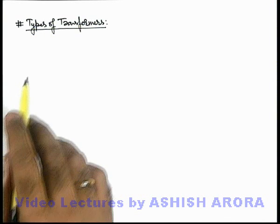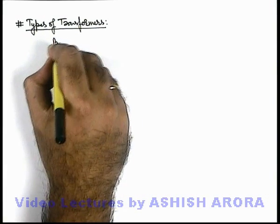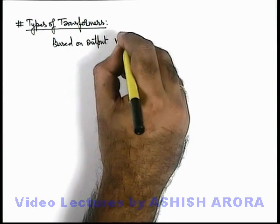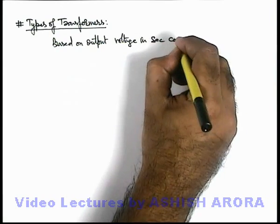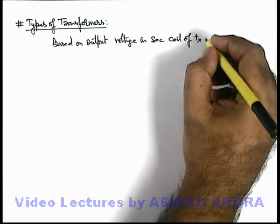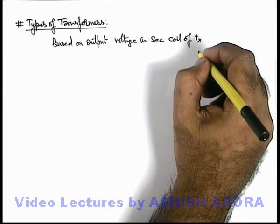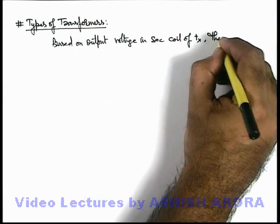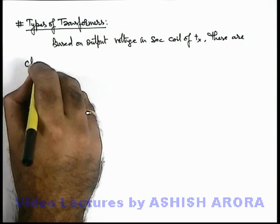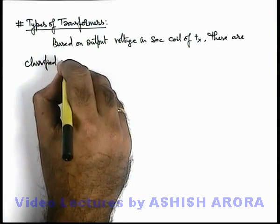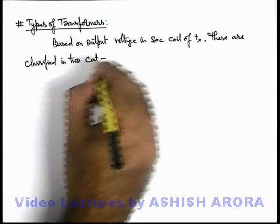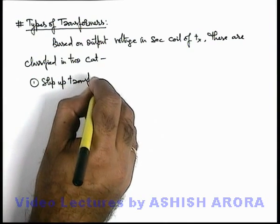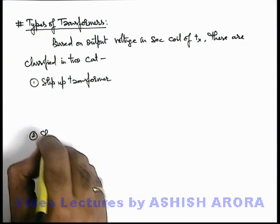Now we'll study about types of transformers. Based on output voltage in the secondary coil of the transformer — here I am abbreviating transformer as 'TMX' — based on output voltage in the secondary coil, transformers are classified in two categories. The first one we call a step-up transformer, and the second one we call a step-down transformer.